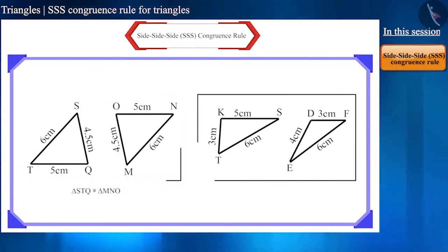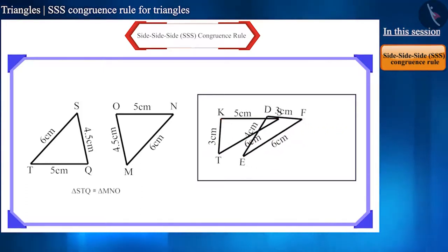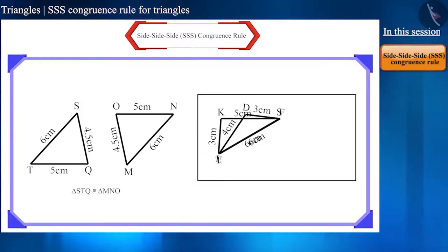In the second pair, two sides of the triangles are equal, but the third side is not equal. They don't completely cover each other. That's why these two triangles are not congruent.